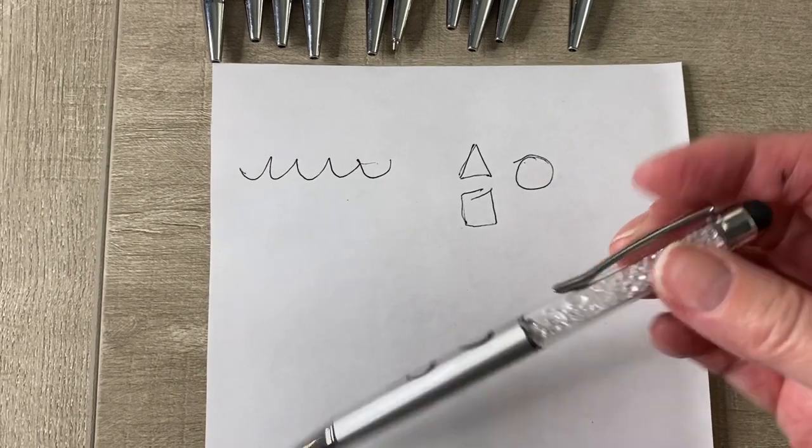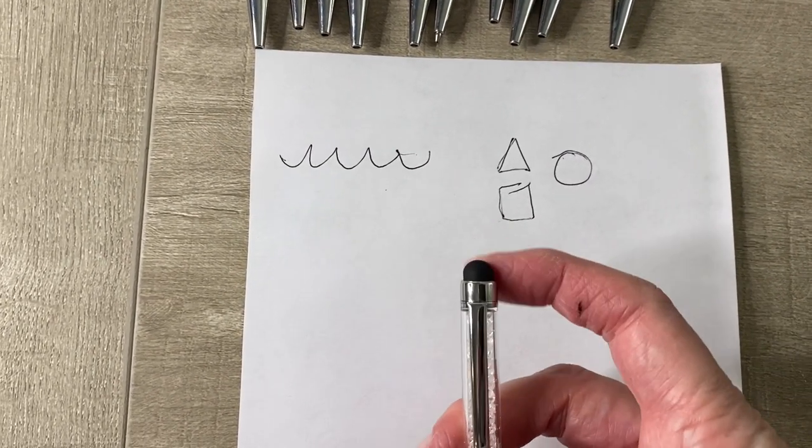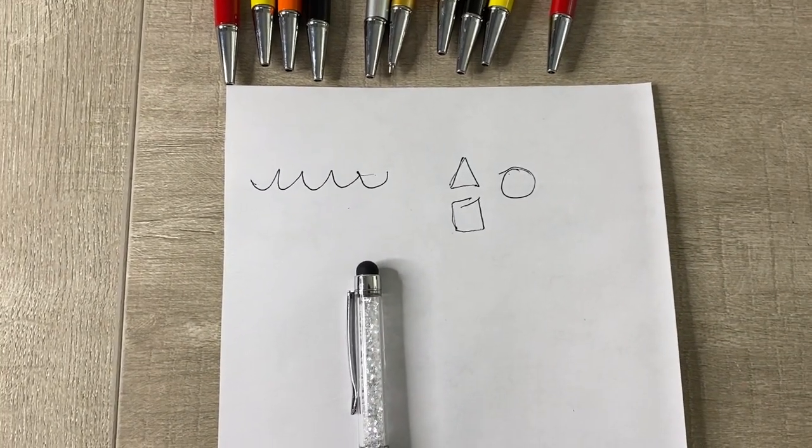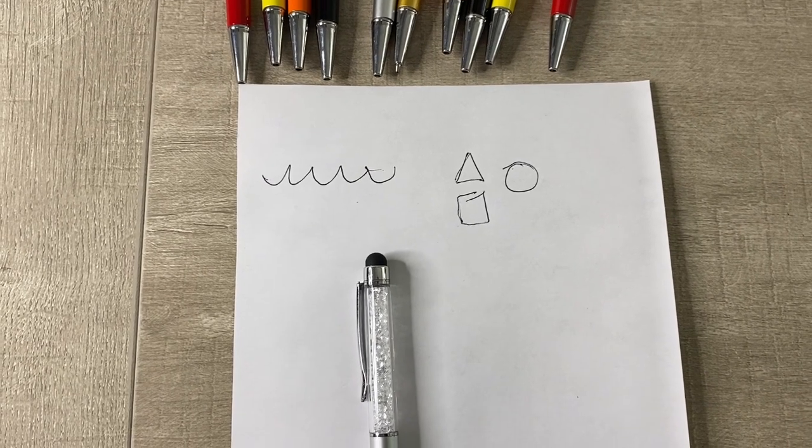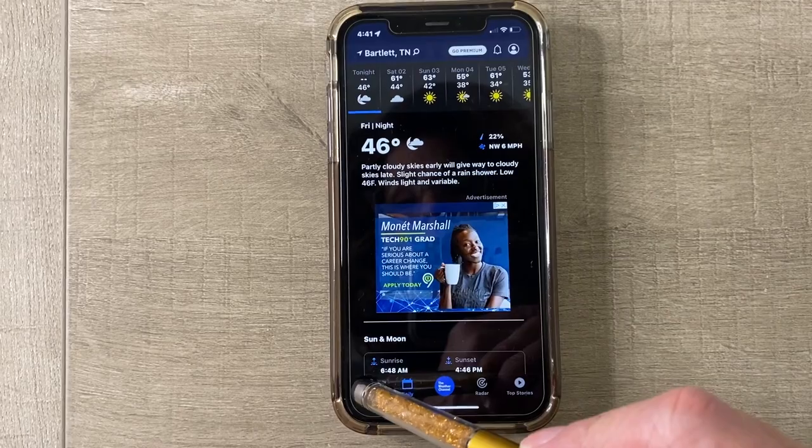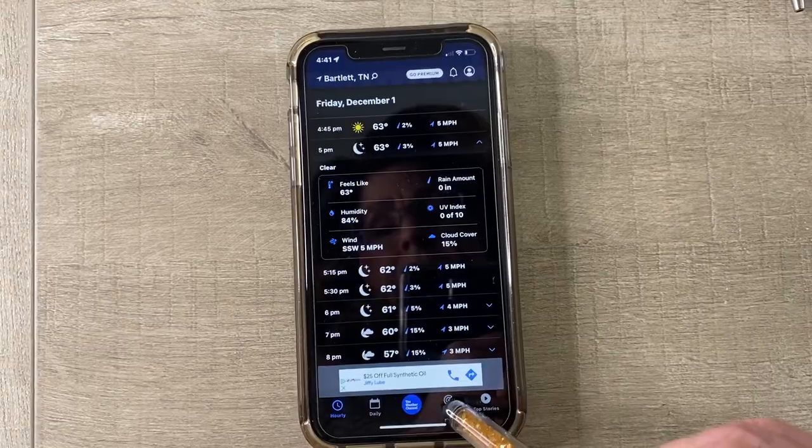The dual end is probably the best feature. It has a silicone stylus on the end, which makes it super easy to use on any of your touchscreens. The stylus at the top is really easy to use and won't scratch any of your screens.